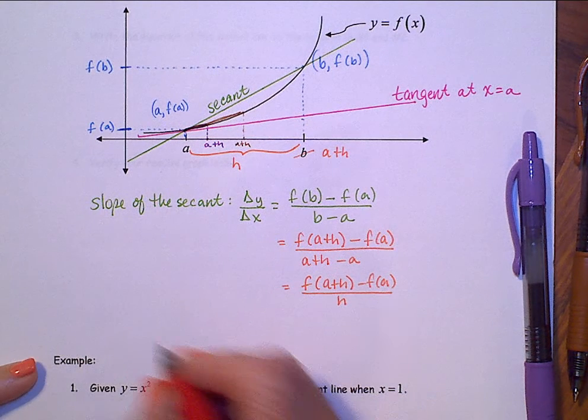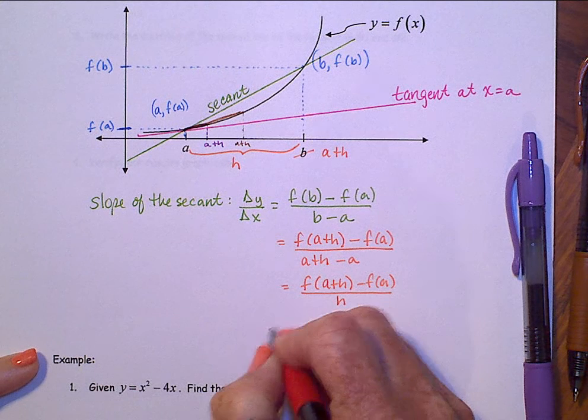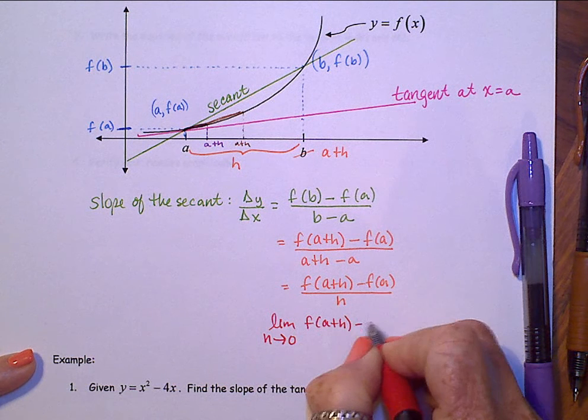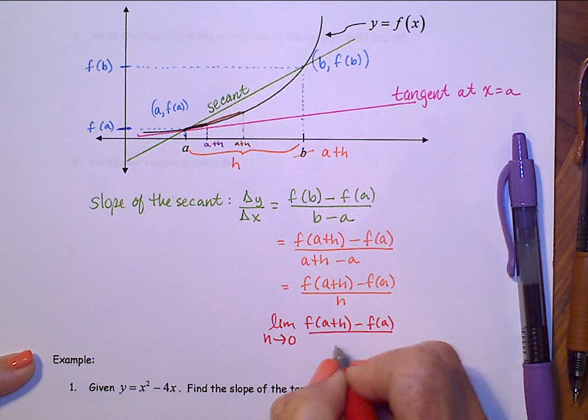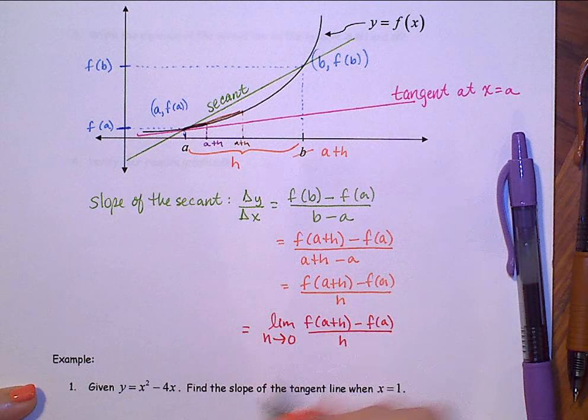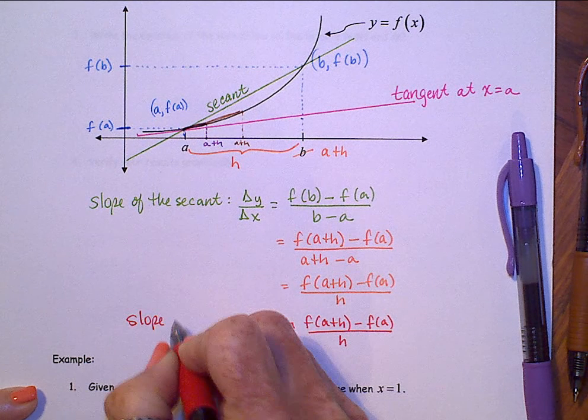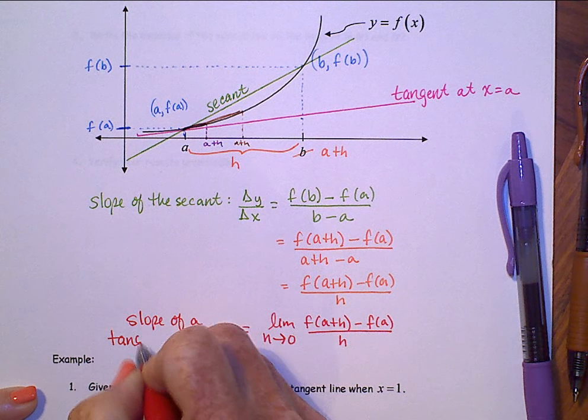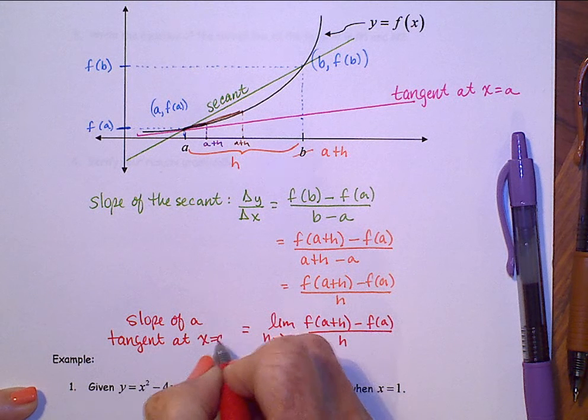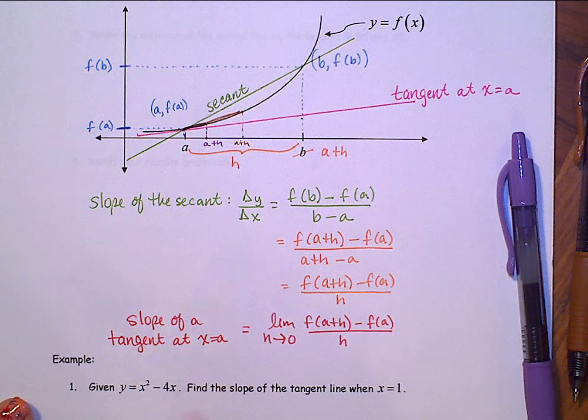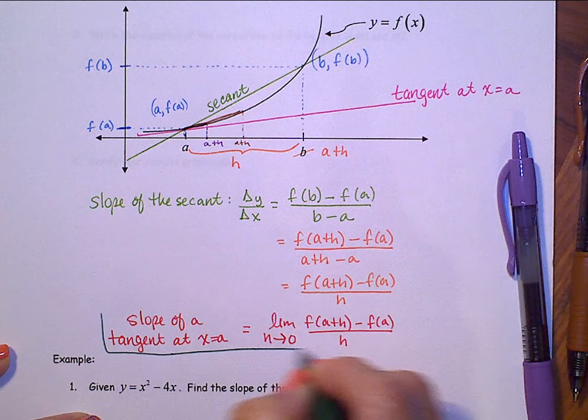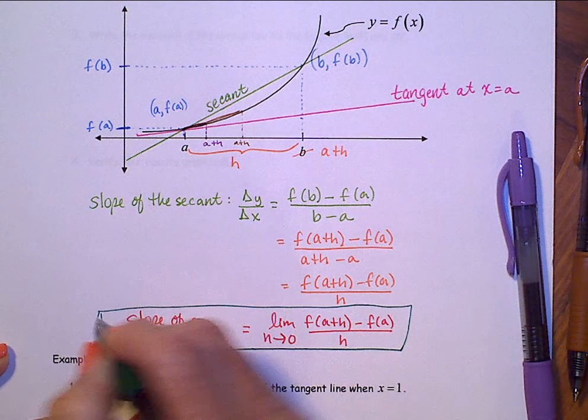Which means, then, that we can take a limit as h approaches 0 of f of a plus h minus f of a all over h. That is exactly the slope of the tangent line. And it's a slope of a tangent at a specific point, x equals a. Yes, you need to memorize this.